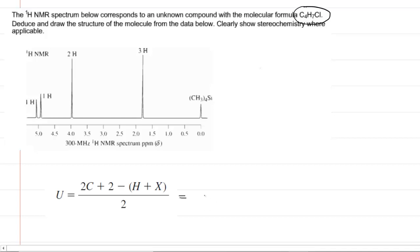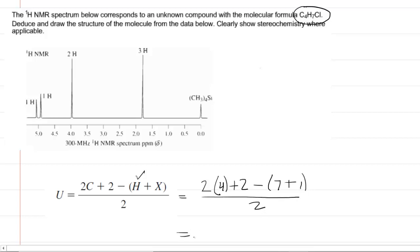We're going to plug the information into this formula to get the degrees of unsaturation. The number of carbons in the molecular formula is 4, the number of hydrogens is 7, and x represents the number of halogens — we have one halogen, chlorine. When we simplify this we get 2 divided by 2, which is just 1. So we have one degree of unsaturation, which could be structurally either a double bond or a ring.